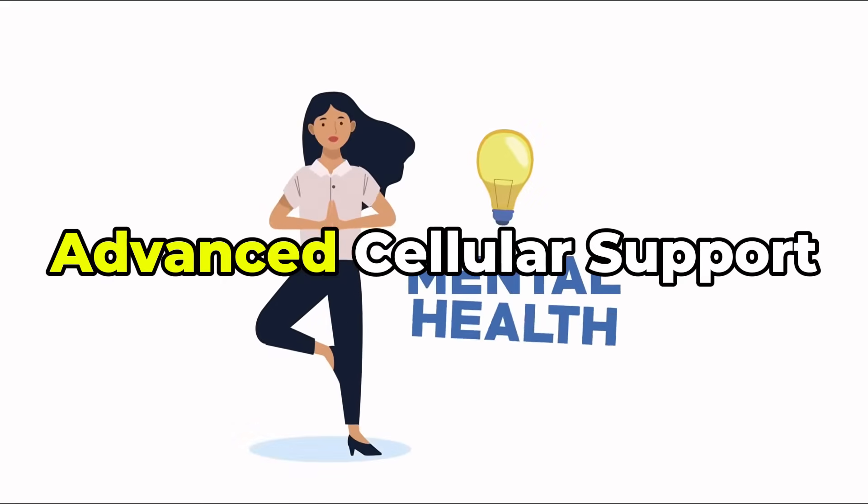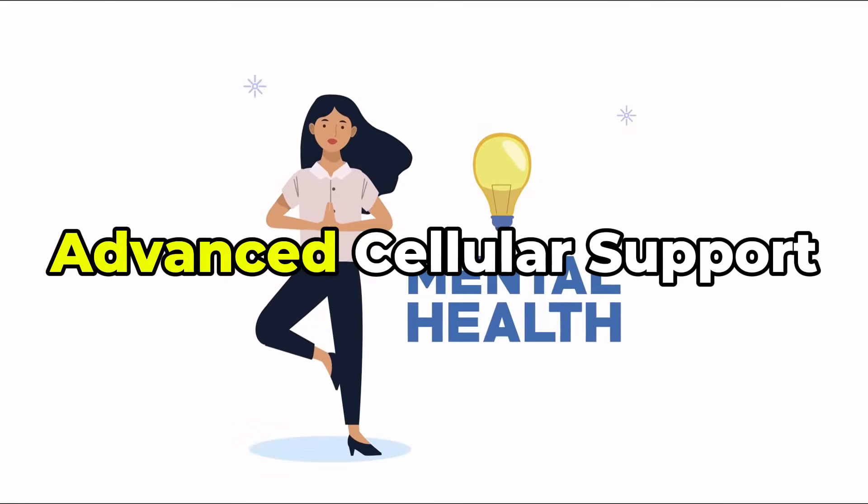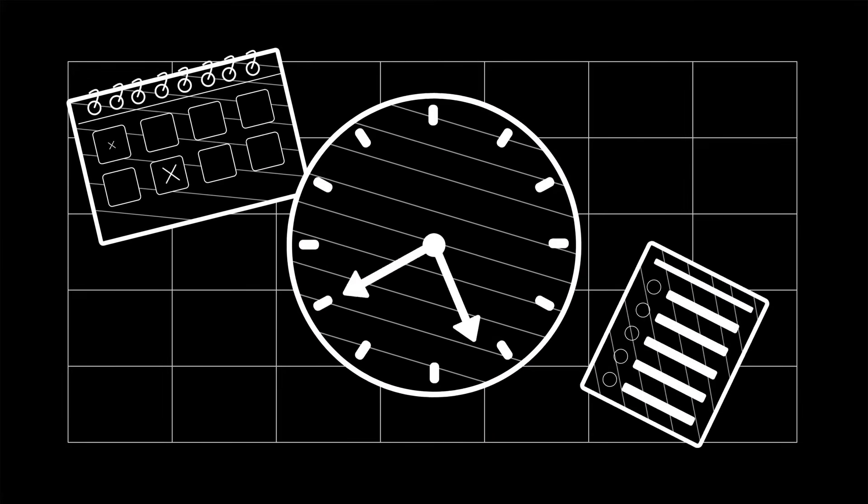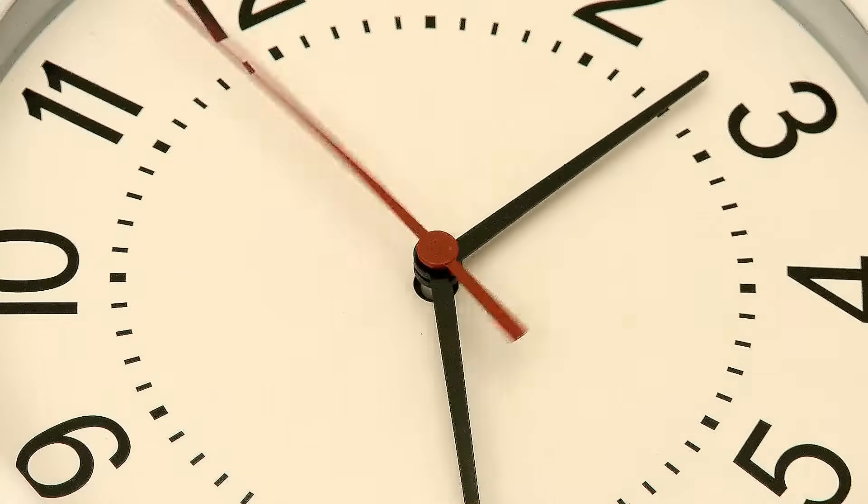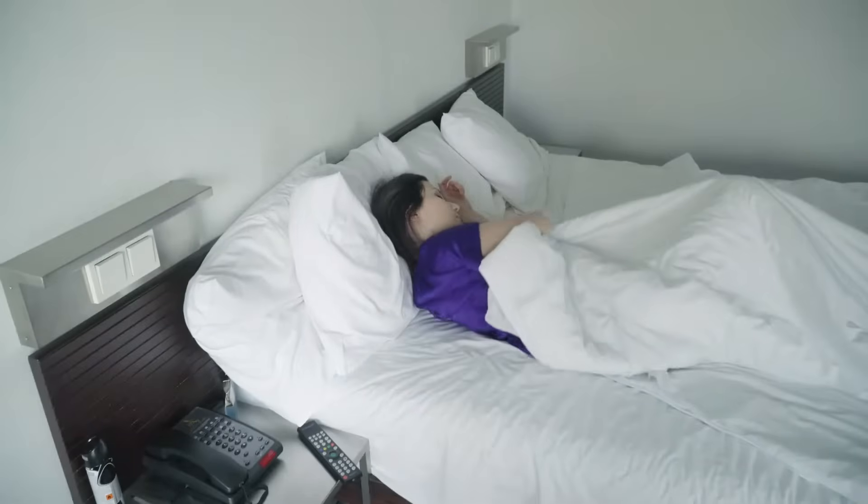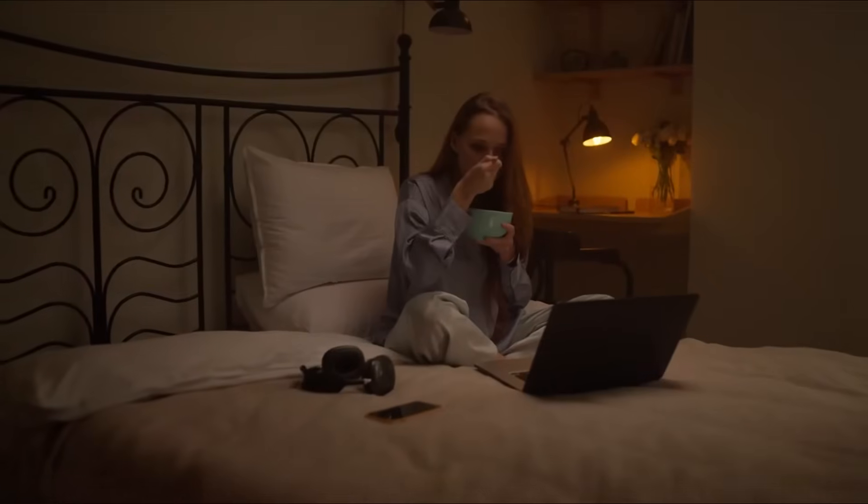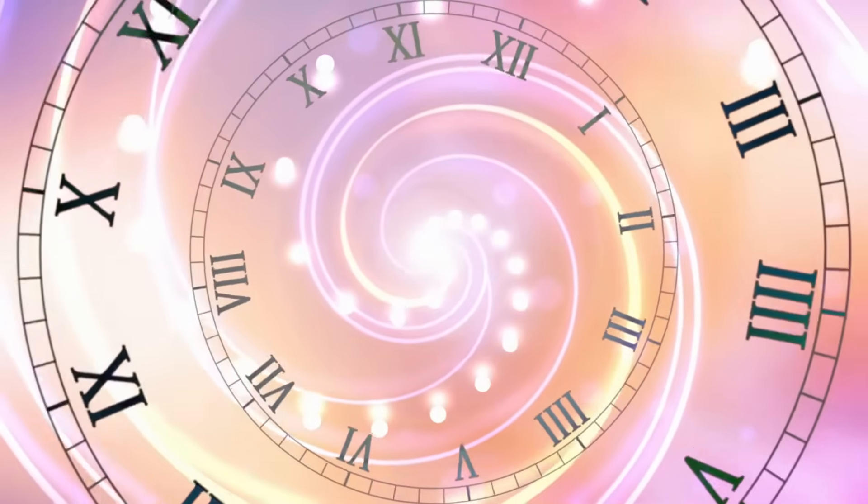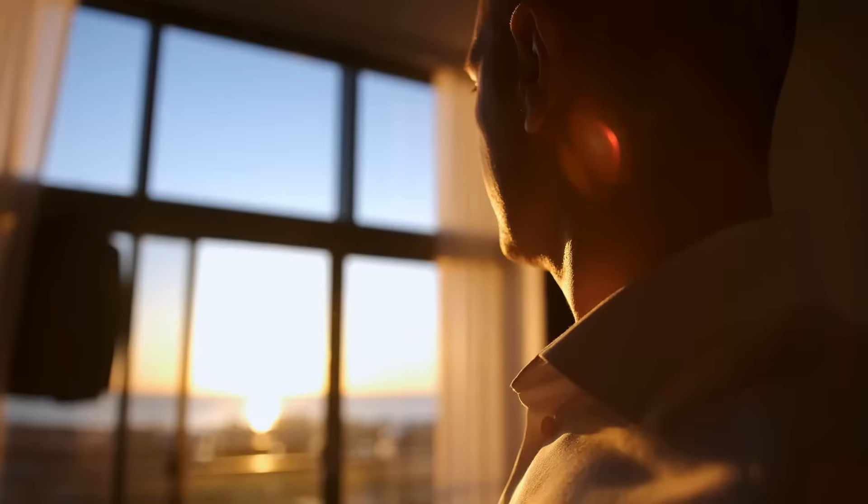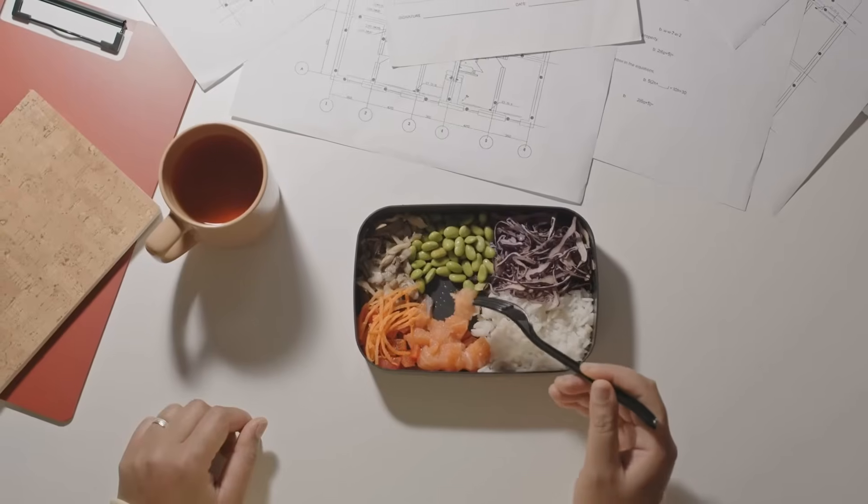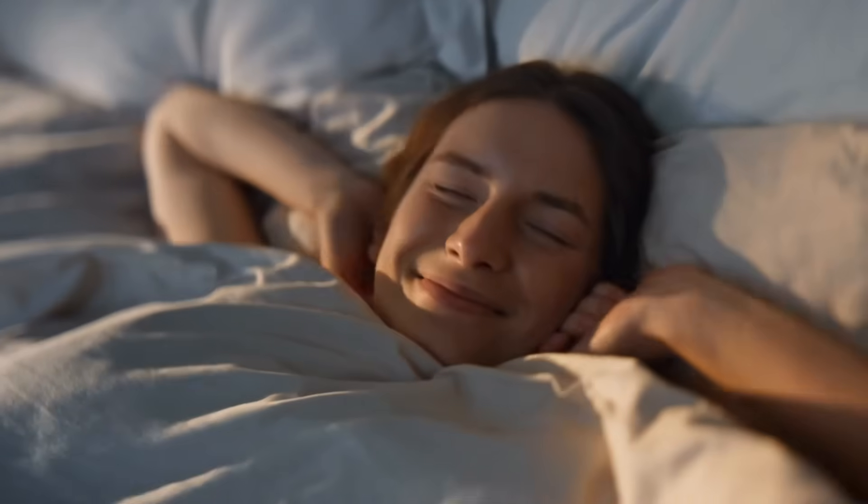Let's round out our framework with four advanced, science-based strategies. First, circadian rhythm optimization. Your cells function on a 24-hour cycle. Disrupting this rhythm through erratic sleep, artificial light at night, or inconsistent meal timing can throw your entire system out of sync. To realign your rhythm, get sunlight early in the day, eat meals at the same times, and go to bed and wake up consistently.